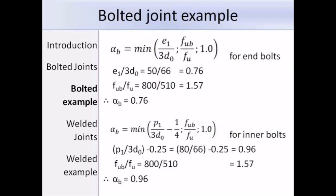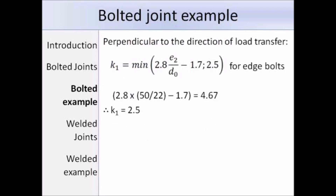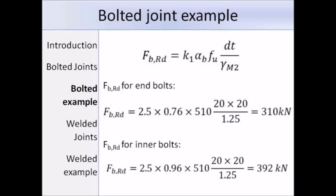For the bearing resistance we work out the alphaB terms for the end bolts and inner bolts by finding the minimum value of the different terms. For the end bolts, alphaB works out as 0.76, and for the inner bolts, alphaB works out as 0.96. Working out K1 by taking the lowest value from those terms, K1 equals 2.5 for the edge bolts. Substituting into the bearing resistance expression — K1 times alphaB times Fu times D times T over gamma M2 — the bearing resistance of the end bolts works out as 310 kN, and the bearing resistance of the inner bolts is 392 kN.